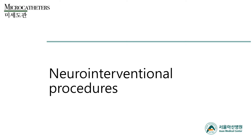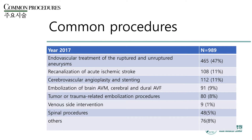From now on, I would like to introduce some typical neurointerventional procedures together with the individual devices. In 2017, Asan Medical Center's neurointervention team performed about 1,000 procedures. Among them, almost half were endovascular treatment of both ruptured and unruptured aneurysms. About 10% were for acute revascularization therapy for acute stroke, another 10% for various angioplasty and stenting procedures, and another 10% for brain AVM and dural AVF embolization, followed by tumor and trauma-related embolization, venous interventions, and spinal procedures. The majority of procedures relate to aneurysm treatment and ischemic stroke.